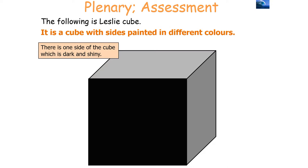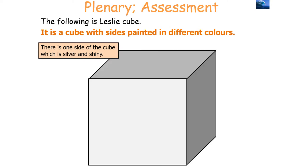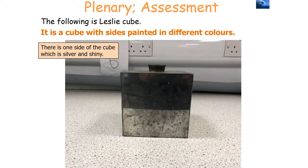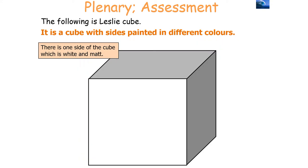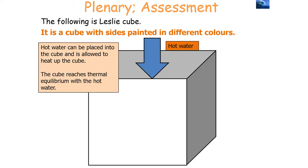One side of the cube is dark and shiny. Another side of the cube will be silver and shiny. And one side of the cube is white and matte.